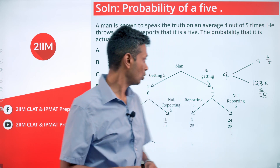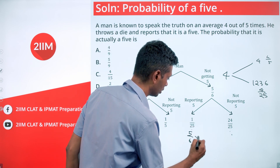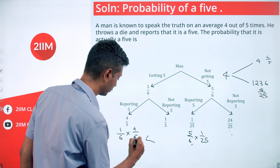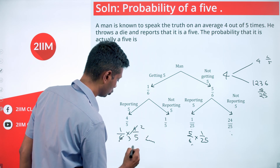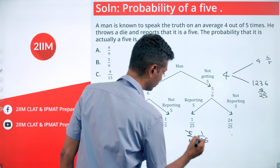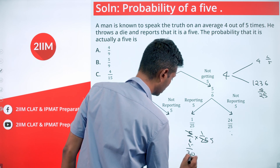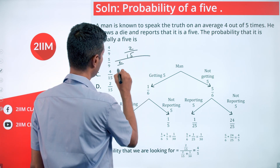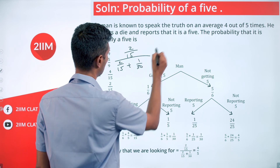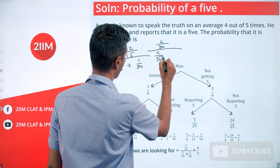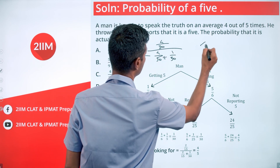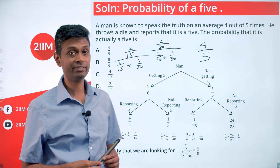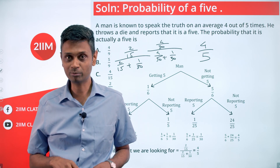We are back to Bayes' theorem with the corrected values. The 'got five, reported five' branch is 1/6 × 4/5 = 2/15 (= 4/30). The 'not five, reported five' branch is 5/6 × 1/25 = 1/30. The final probability is (2/15) / (2/15 + 1/30) = (4/30) / (4/30 + 1/30) = 4/30 ÷ 5/30 = 4/5. This seems intuitively right: he speaks truth 4 out of 5 times, so if he reports a five, the probability it actually is a five should be roughly in that ballpark — and indeed it is 4/5.